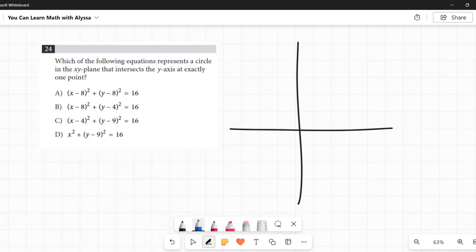So first one, x minus 8 squared plus y minus 8 squared equals 16. So minus 8, that means it's going over here, 8. And then y minus 8 means it's going up, 8. And equals 16 means a radius of 4. So that radius is only like this. That's not touching anything. Nope. That's not it. A is out.